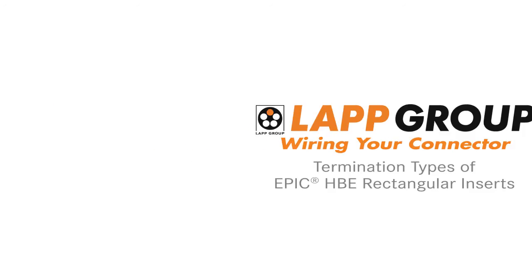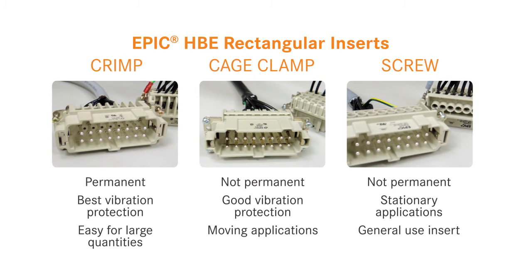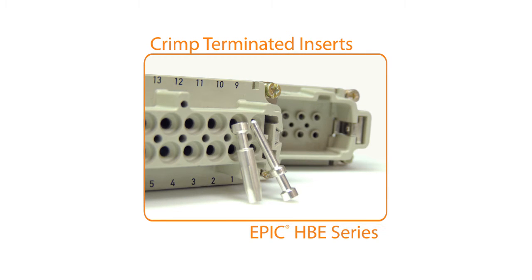LAP Group's EPIC HBE Series Rectangular Connectors offer three different kinds of wire termination for various applications: crimp, cage clamp, and screw. Each termination type has its own benefits for specific applications. First, we will look at wiring crimp inserts.